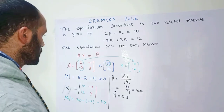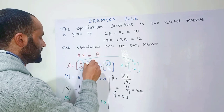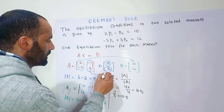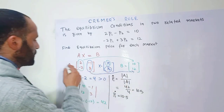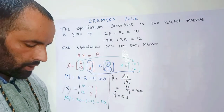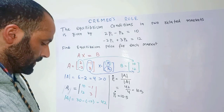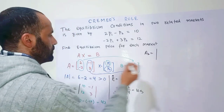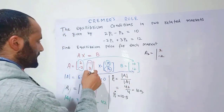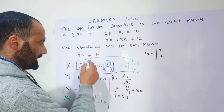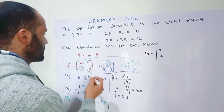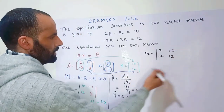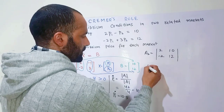To find the equilibrium value of p2, we replace the second column of the coefficient matrix with the vector of constant terms and form a new matrix A2. So we write 2 and minus 2 in the first column, and replace minus 1 and 3 with 10 and 12, then take the determinant of A2.